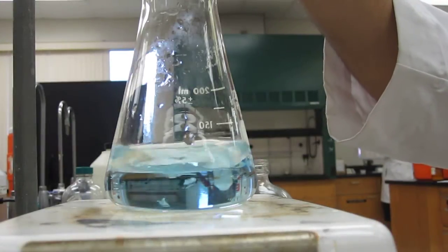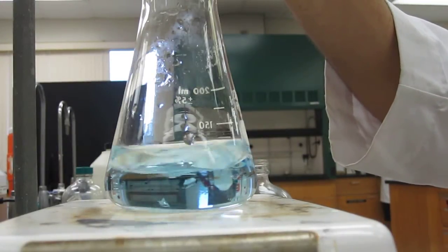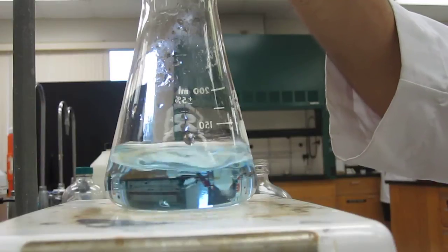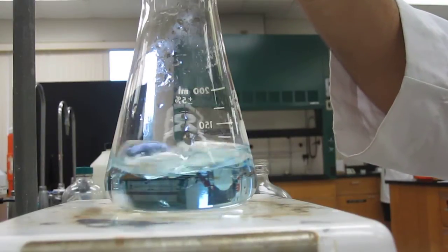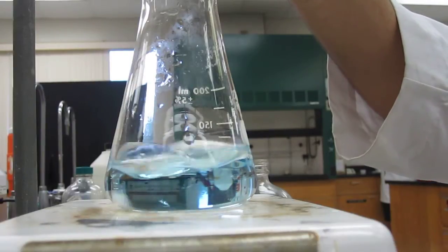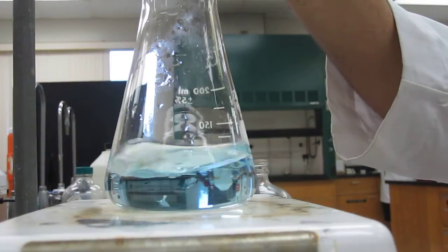So we're going to add some 2 molar hydrochloric acid to decrease the pH, to make the pH lower, and see what happens. Hopefully you'll be able to observe some sort of color change while we're doing this.